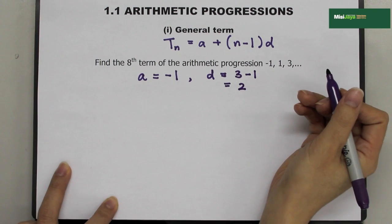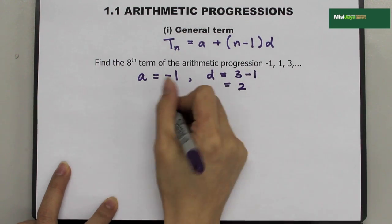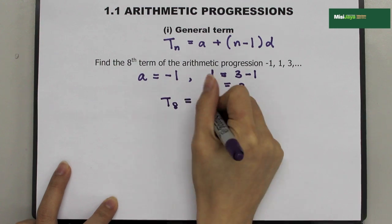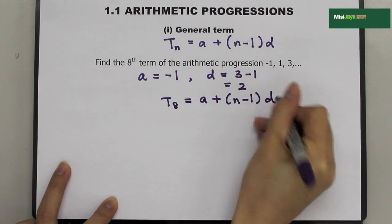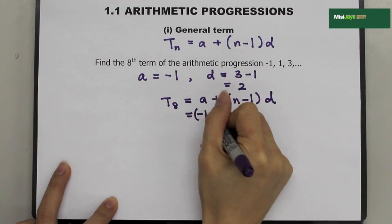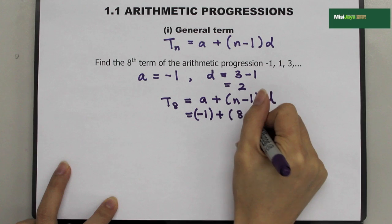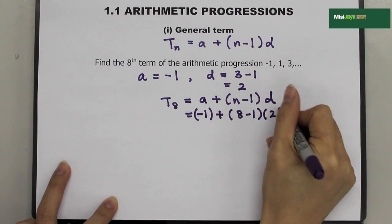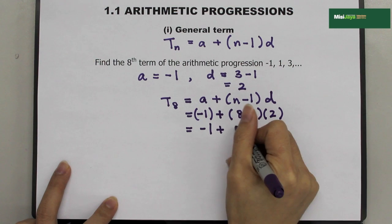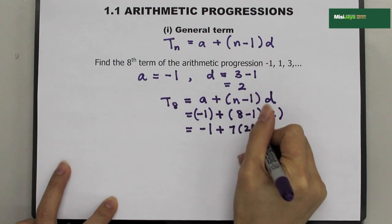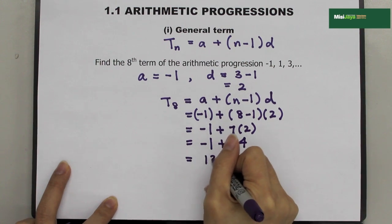Now we can find the eighth term by substituting A and D into the formula. TN equals A plus N minus 1 times D. So, negative 1 plus 8 minus 1 times 2, which equals negative 1 plus 7 times 2, giving negative 1 plus 14. So, it equals 13.